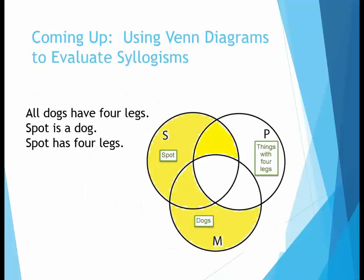The usefulness of Venn diagrams goes beyond just visually illustrating the four standard claims — Venn diagrams can be used to test the validity of syllogisms. Syllogisms are arguments with three terms, two premises, and a conclusion. Since there are three terms, three circles are used to represent the terms in the argument. The use of Venn diagrams to test the validity of syllogisms will be the subject of another video. Thanks for watching.